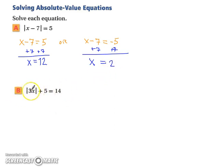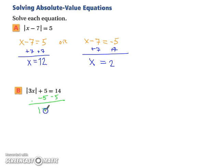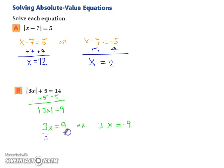In example B, the absolute value is not by itself, so step one is to isolate it. Subtracting 5 from both sides leaves the absolute value of 3x equal to 9. Now we split: 3x equals 9 or 3x equals negative 9. Dividing both sides by 3 gives x equals 3 or x equals negative 3.